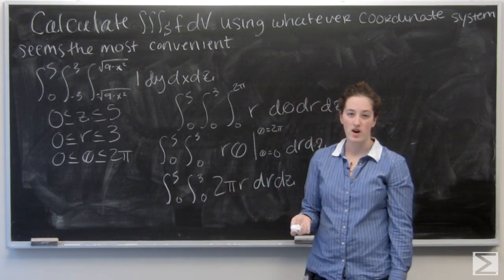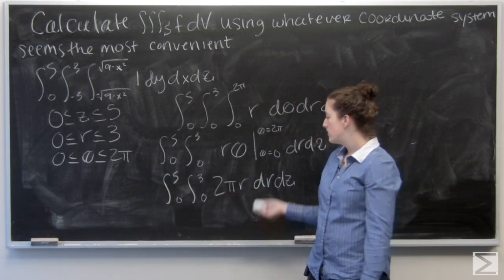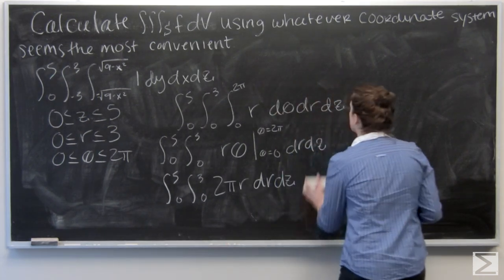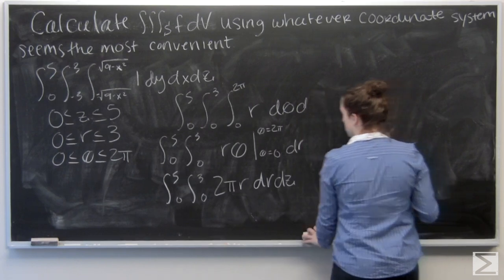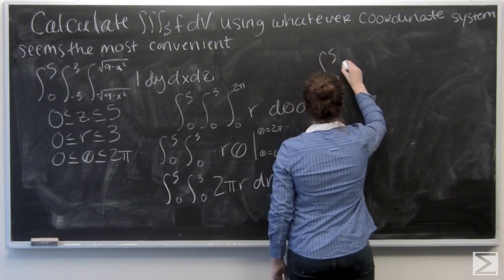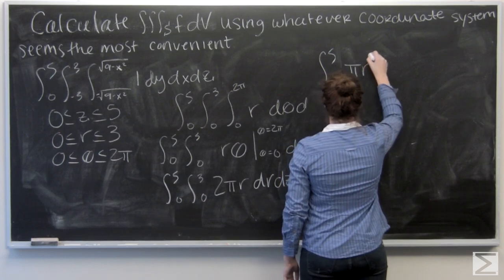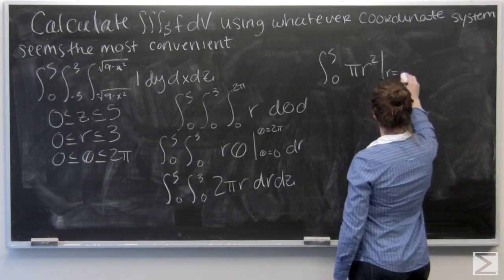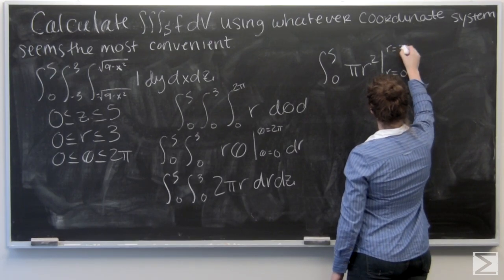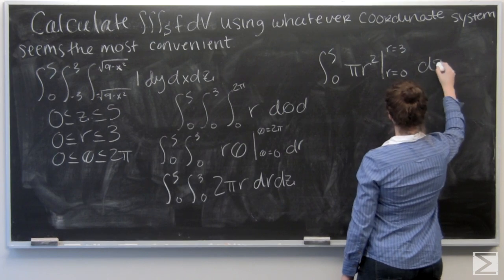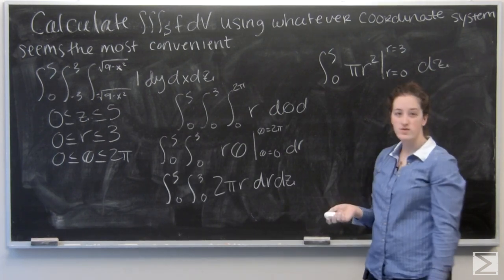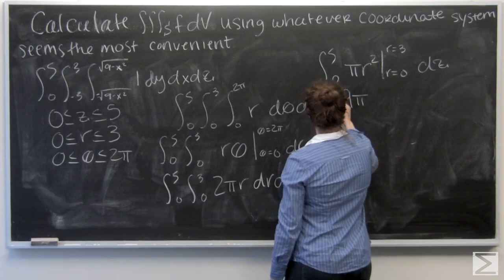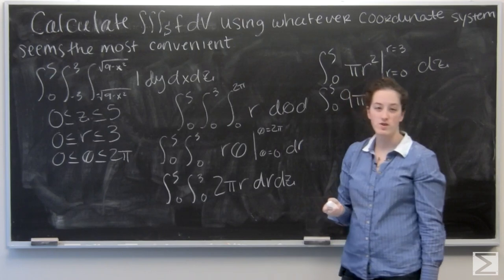So now I want to integrate two pi r with respect to r. Pi is just acting like a constant, so the integral of two r is going to be r squared. And I want to evaluate from r equals zero to r equals three. So when I plug in three for r, I'm going to get nine pi. And when I plug in zero for r, I'm just going to get zero.